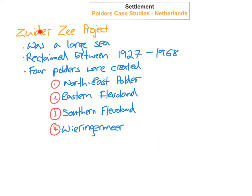The Zeider Z project: first of all, it was a large sea before the land was reclaimed. It was reclaimed between the years 1927 and 1968, and there were four Polders created: the North East Polder, the Eastern Flevuland, the Southern Flevuland, and the Waringmer.